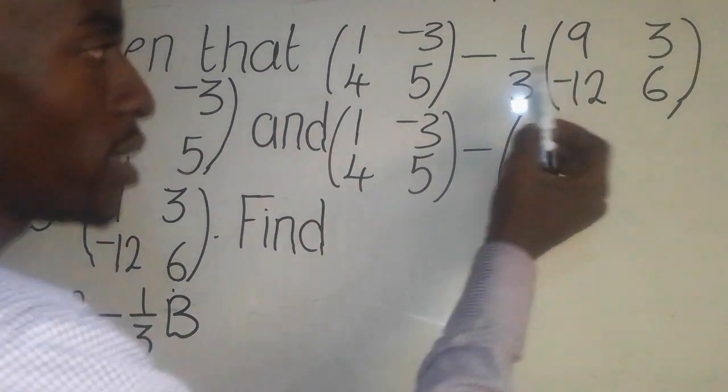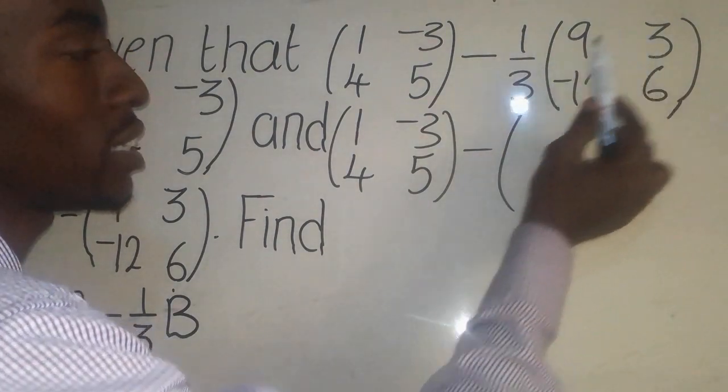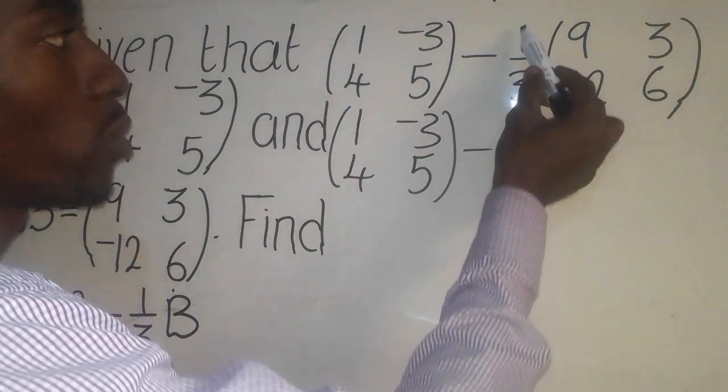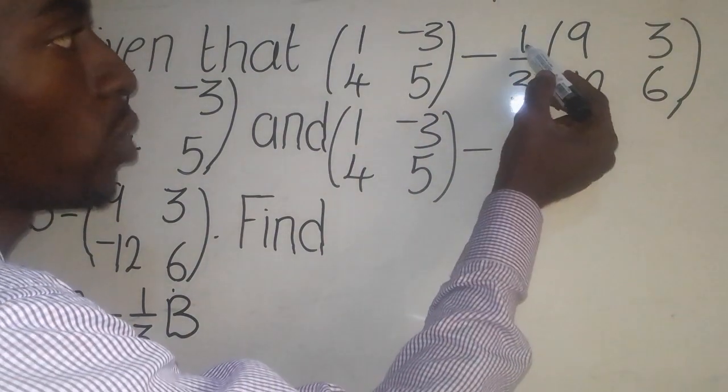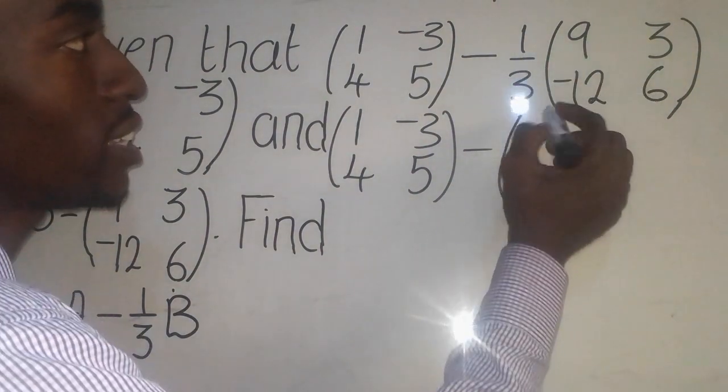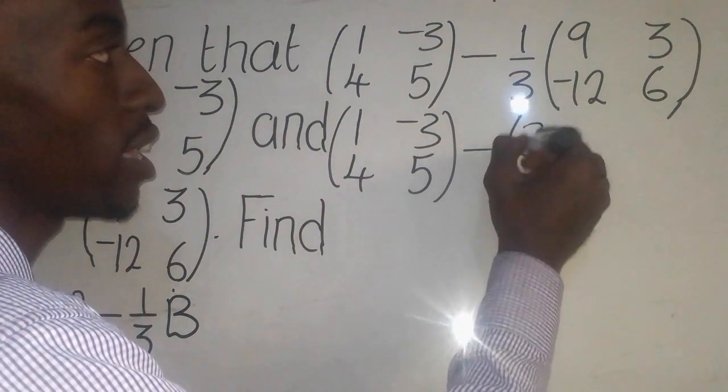So here, the best way for us to simplify this part is to multiply each number which is here by 1 over 3. So it will be 1 over 3 times 9, it's going to give me 3 there.